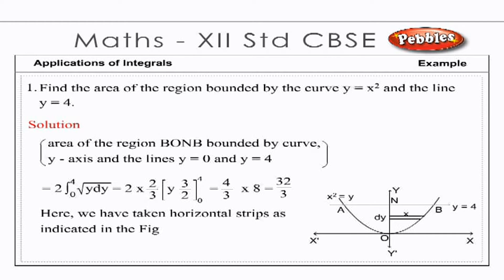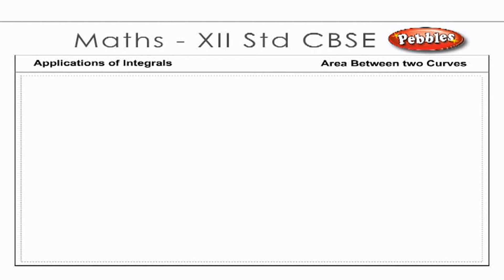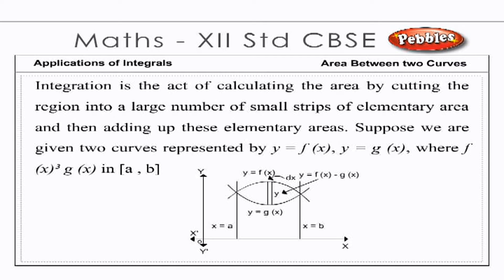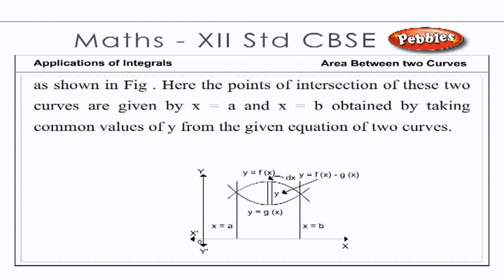Area between two curves. Integration is the act of calculating the area by cutting the region into a large number of small strips of elementary area and then adding up these elementary areas. Suppose we are given two curves represented by y = f(x) and y = g(x), where f(x) ≥ g(x) in [a, b], as shown in the figure. The points of intersection of these two curves are given by x = a and x = b, obtained by taking common values of y from the given equations of the two curves.